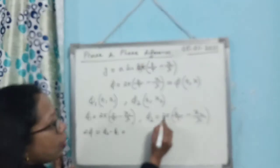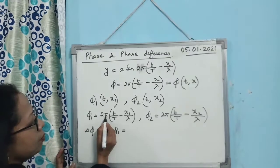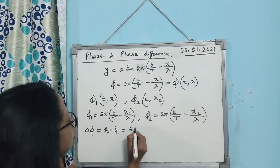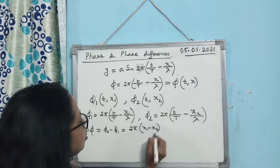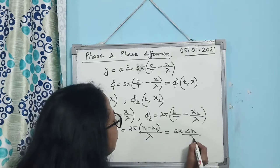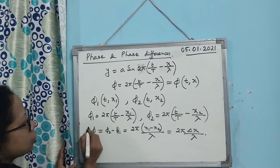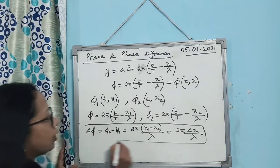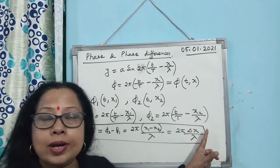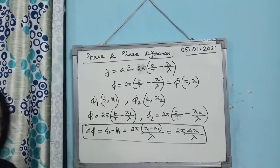So you get φ₂ minus φ₁ = 2π(−x₂/λ) minus 2π(−x₁/λ) = 2π(x₁ minus x₂)/λ. You can write this as 2π·Δx/λ. This is the phase difference between two particles at different positions x₁ and x₂, which equals 2π(x₁ minus x₂)/λ.